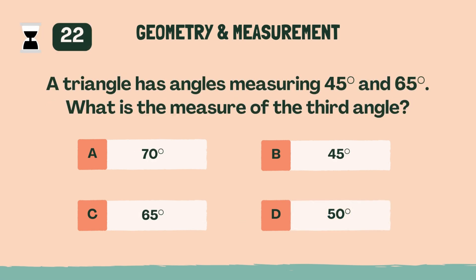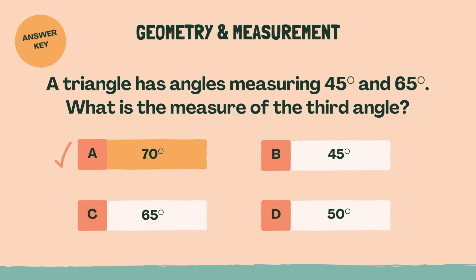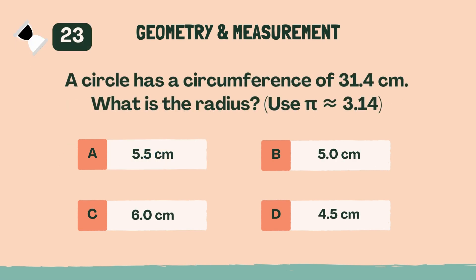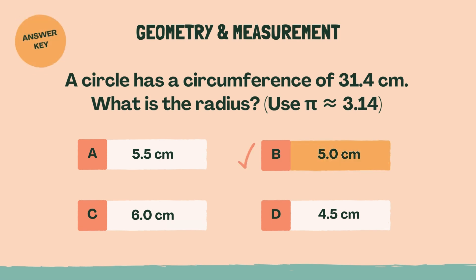A triangle has angles measuring 45 degrees and 65 degrees. What is the third angle? The answer is A, 70 degrees. A circle has a circumference of 31.4 centimeters. What is the radius? The answer is B, 5.0 centimeters.